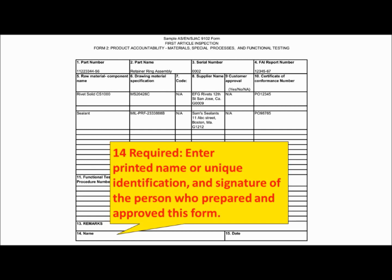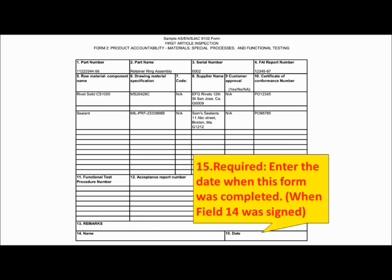Field 14 is required — please enter the printed name or unique identification and signature of the person who prepared and approved this form. Field 15 is required — please enter the date when this form was completed and Field 14 was signed.